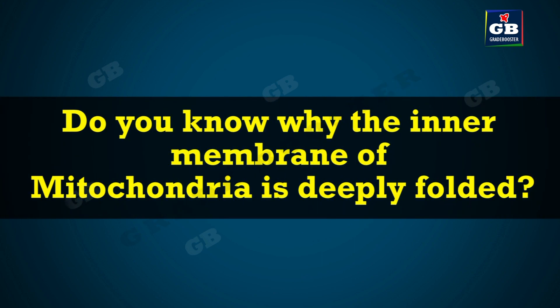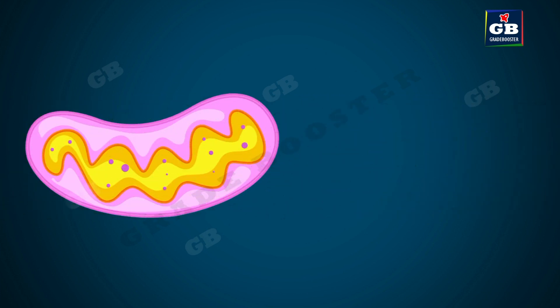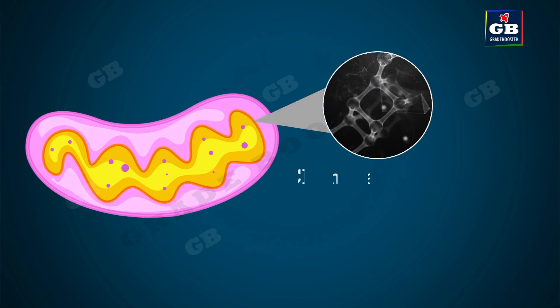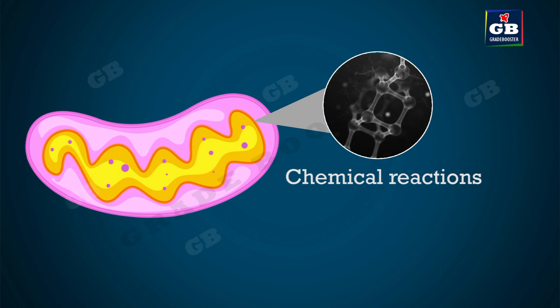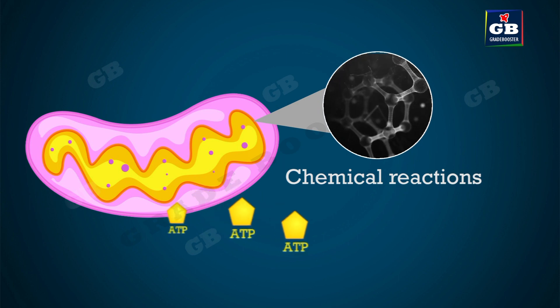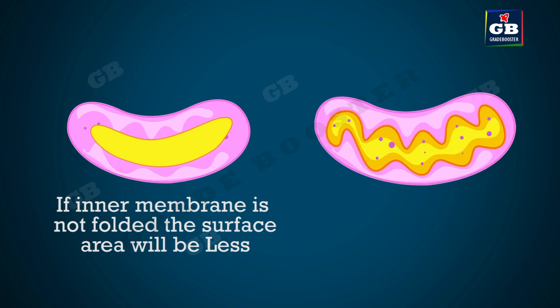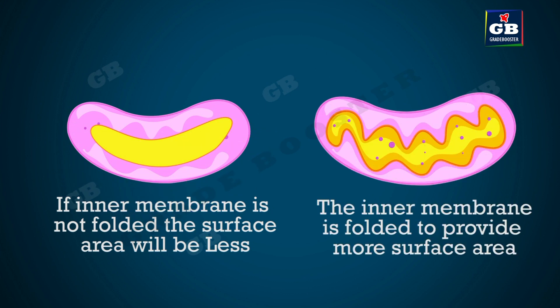Do you know why the inner membrane of mitochondria is deeply folded? Mitochondria need more surface area to carry out special reactions in which a special energy molecule called ATP is produced. So, to provide more surface area, the inner membrane is deeply folded.